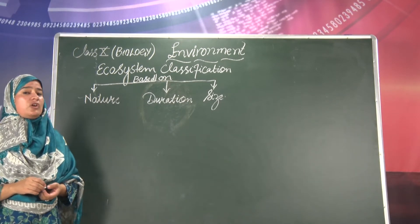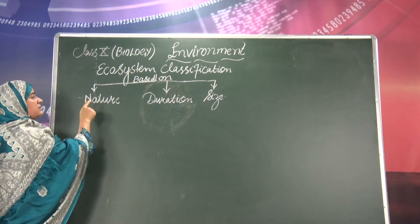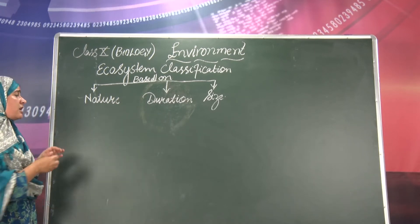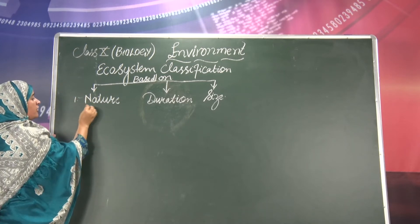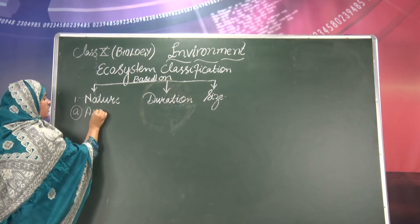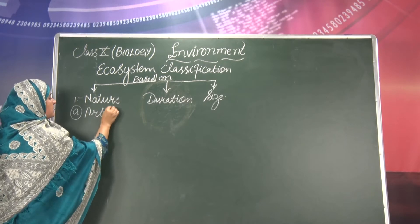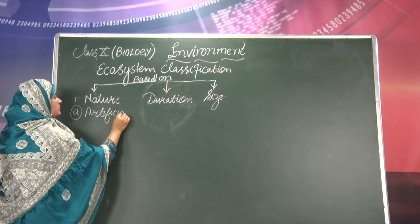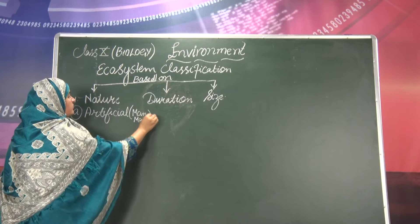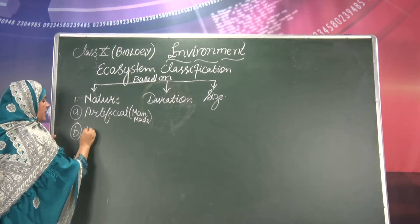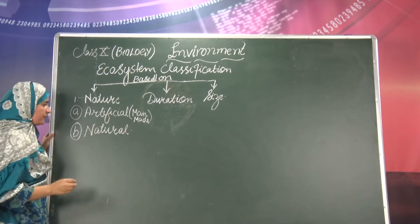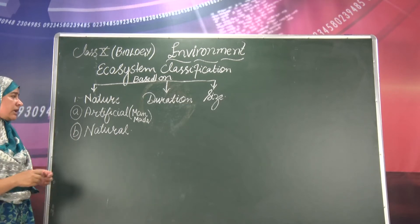The classification of ecosystem is based upon certain factors: based upon nature, based upon duration, and based upon size. First, based upon nature, we have two types of ecosystem. One is artificial, which is also considered as manmade, and the second is natural, which is gifted by God or nature to us.